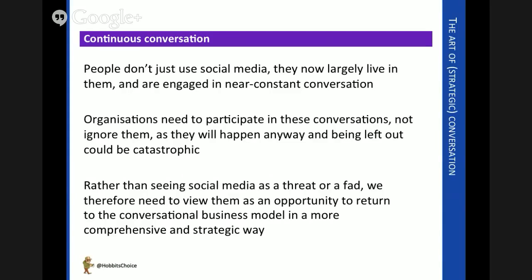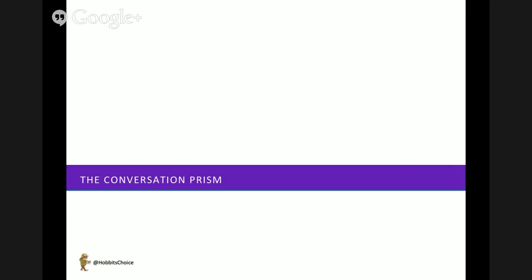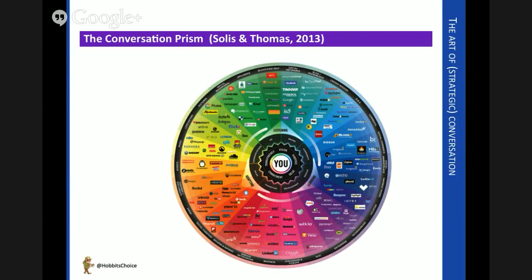The conversation prism is a tool to help us navigate the social media environment. It's a map that organizations can use. It was first designed by Solis and Thomas about four or five years ago. In its latest iteration, the organization is placed at the center, with strategic values and objectives emanating outward — communicating the organization's business purpose — and it radiates out to the different channels and what elements of an organization's activities they are best suited towards.